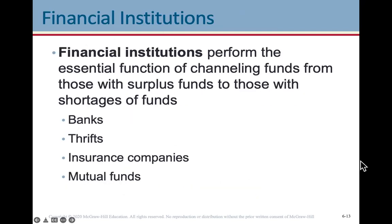Financial institutions perform essential functions of channeling funds from those with surplus funds to those with a shortage of funds. Your bank gets money from people who have it and lends it to people who need it — that's essentially what financial institutions are doing. These include banks, thrifts, insurance companies, and mutual funds.